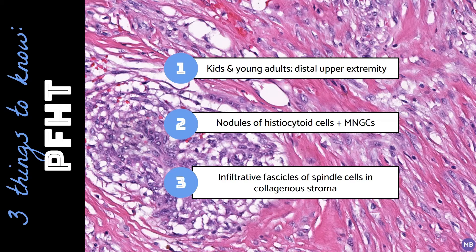In addition, the multinodular growth seen in cellular neurothekeoma may mimic the histiocytoid nodules in this tumor. Immunohistochemistry is not especially helpful. The spindle cells in plexiform fibrohistiocytic tumor are at least focally positive for SMA, and histiocytoid cells are positive for CD68 and CD163.